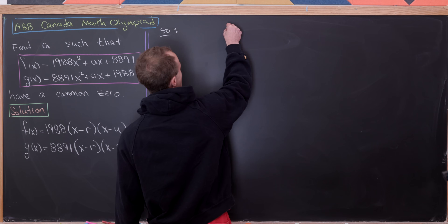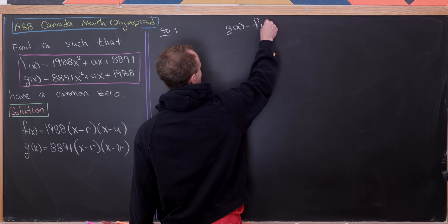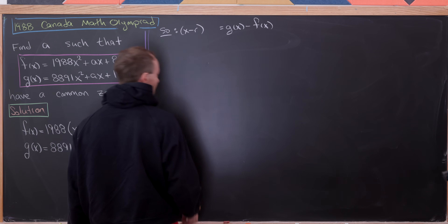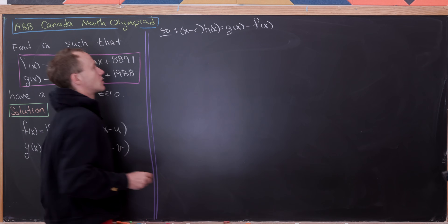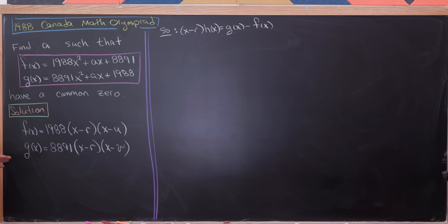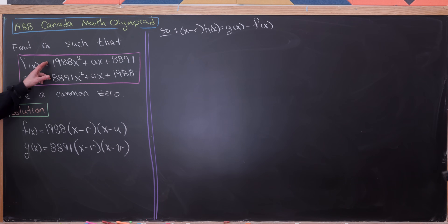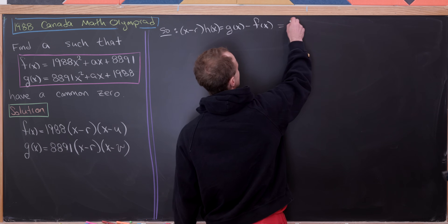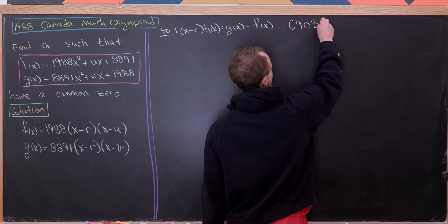Now let's notice that if we take g(x) minus f(x), on the one hand we'll have (x - r) times some new polynomial h(x). We don't really care what that new polynomial is — it's a linear polynomial. The important thing is we have a factor of (x - r). Now let's take the difference in expanded form: 8891x² minus 1988x² simplifies to 6903x².